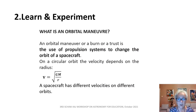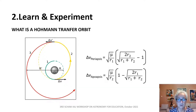An orbital maneuver, or a burn or thrust, is the use of propulsion systems to change the orbit of a spacecraft. On a circular orbit, the velocity depends on the radius as shown in this formula. A spacecraft in these conditions has different velocities on different orbits. The yellow part of this diagram represents a Hohmann transfer orbit — half of an ellipse — and the spacecraft has to change its velocity at both the beginning and the end of this transfer orbit.